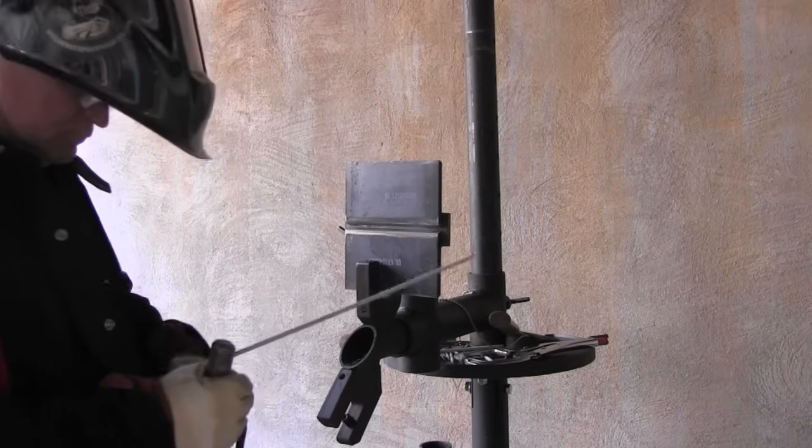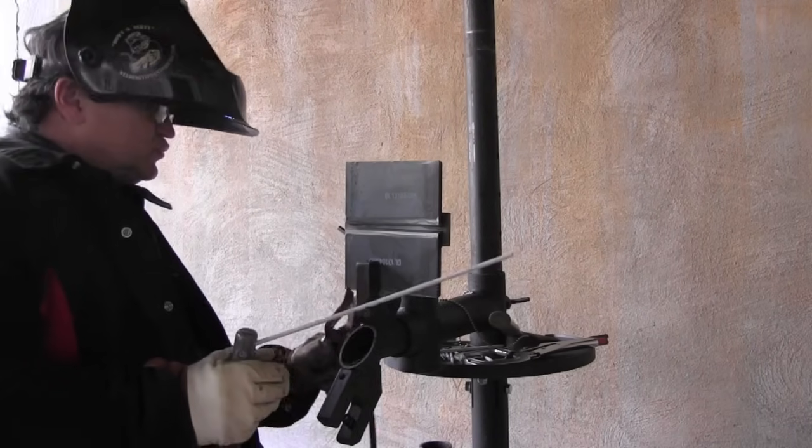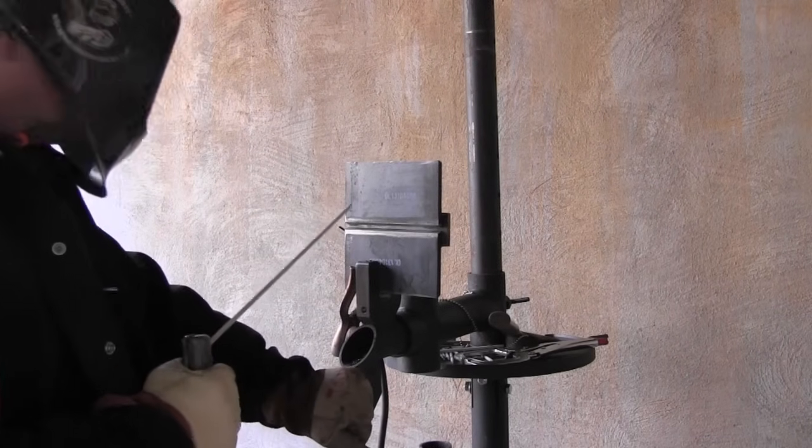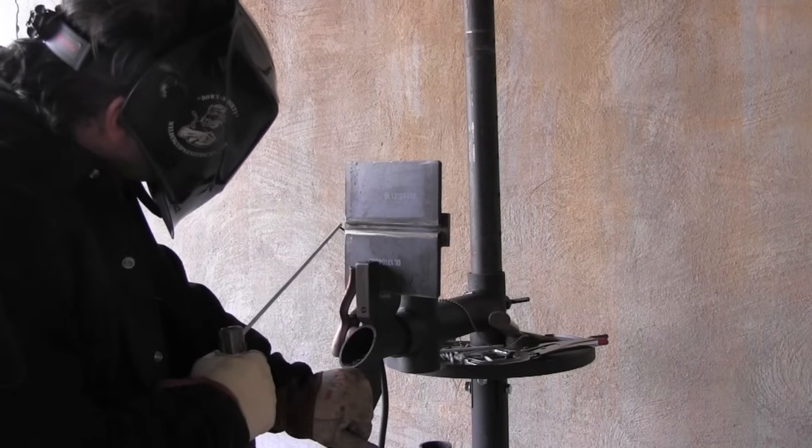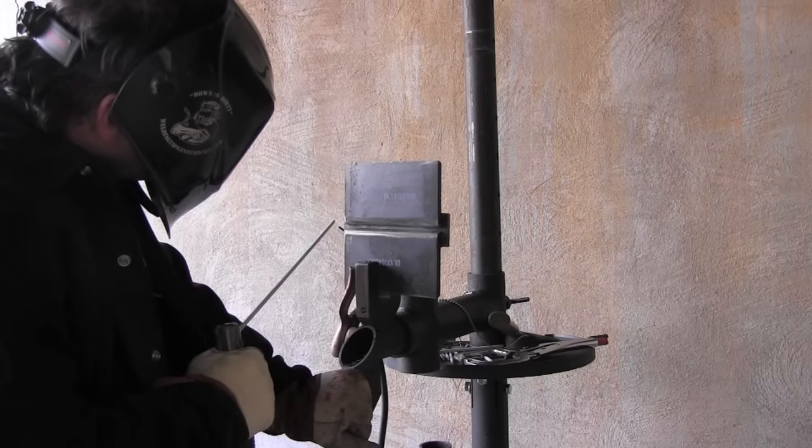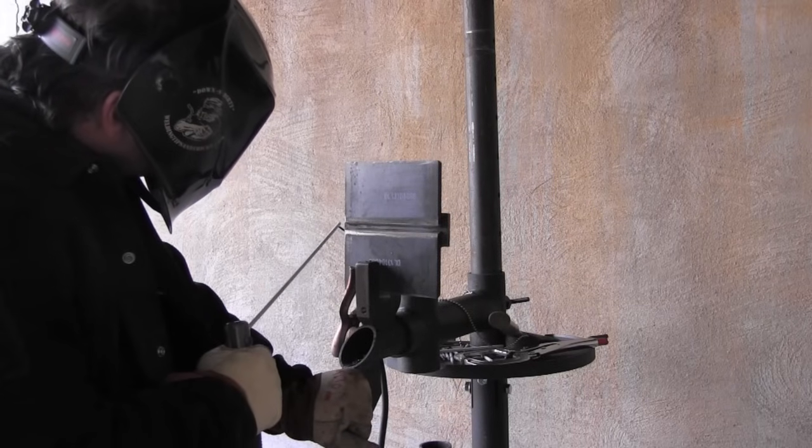I'm attaching the ground clamp directly to the plate. That generally is a good practice. The main thing is not only getting a good ground but also just preventing magnetic arc blow. If you get arc blow to where the rod is fingernailing toward one side or the other of the bevel, then move your ground clamp to the other side of the plate. It usually will help.